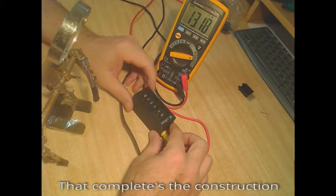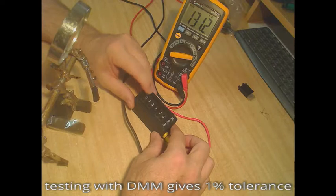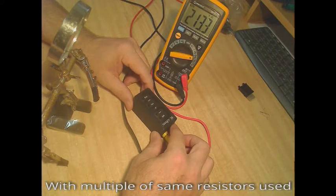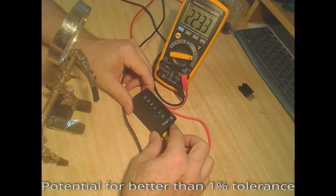Well that completes the construction. Testing with a DMM gives good results with 1% tolerance, as expected from the resistors I used. Since using multiple of the same resistor values, I thought there may be the potential for better than 1%, as random error in the resistor values would tend to cancel out.